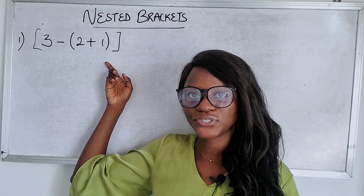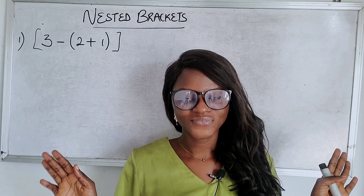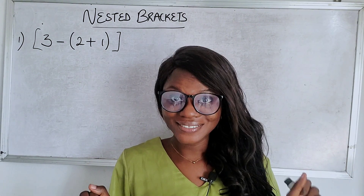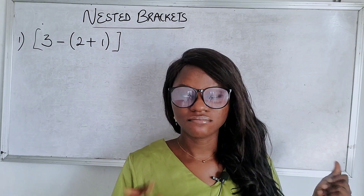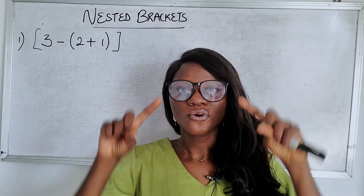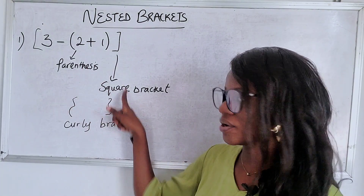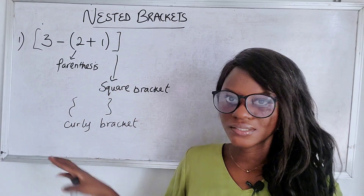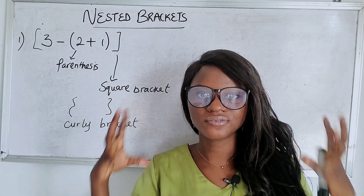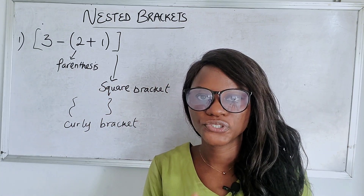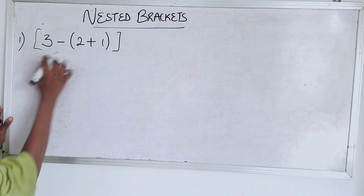This is a mathematical expression — there is no equal sign. If there was an equal sign, you would call it an equation. We did that in the previous class, so if you missed it, you can check that out. Now, nested brackets is a situation where you have brackets within other brackets. We have the parenthesis, the square brackets, and the curly brackets. When you're given an expression or equation with these different brackets together, it's left for you to know what to do next — and it's very simple and straightforward.